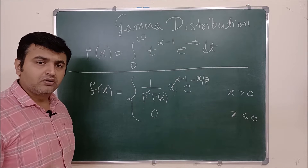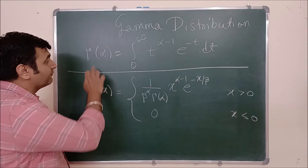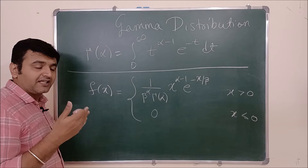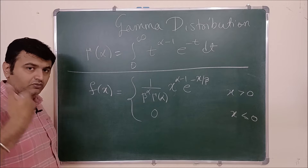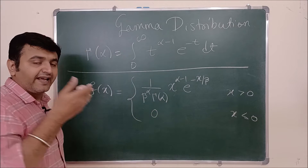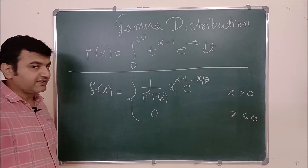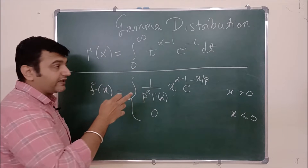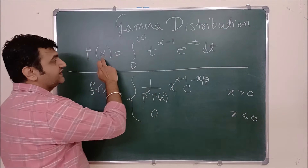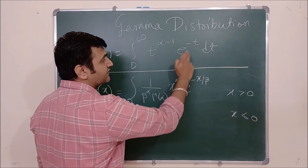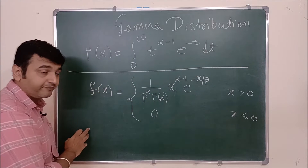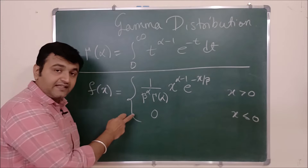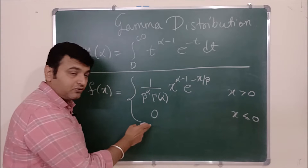The gamma function is defined for any alpha, where alpha can be any real number except zero, minus one, minus two, minus three, and so on. It is defined as the improper integral: Γ(α) = ∫₀^∞ t^(α−1) · e^(−t) dt, where t is the variable.